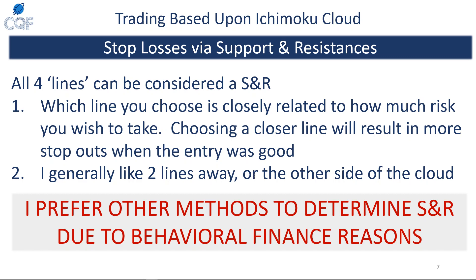To be honest, I prefer other methods to determine supports and resistances. I'm a big believer that supports and resistances are based on behavioral finance — meaning something well-known is much more likely to be respected. Something like a round number has a much higher likelihood of being respected than something more exotic like the Ichimoku cloud or specifically calibrated exponential moving averages. Things people simply don't use as much won't be respected as much as something very well-known, like a round number such as one hundred dollars.